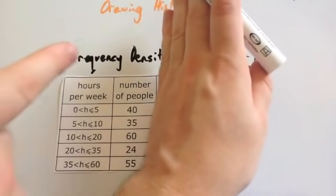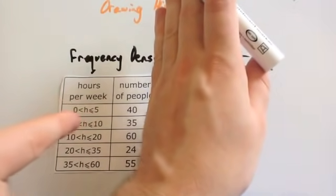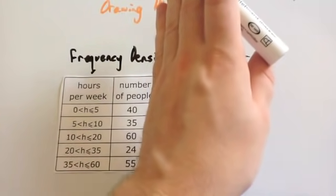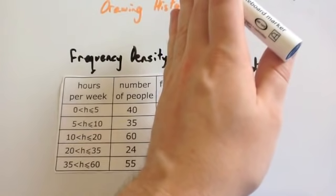they've got unequal class widths. Some of them, the ones at the top, have got a class width of 5, 5, 10, 15 and 25. So as you can see, the class widths vary quite a lot in this table.